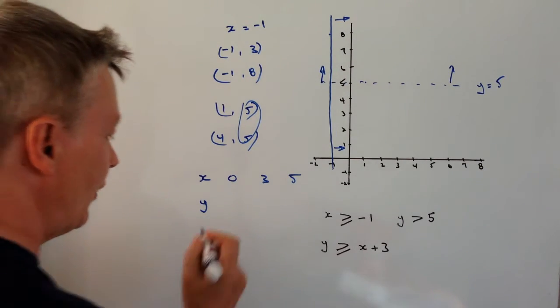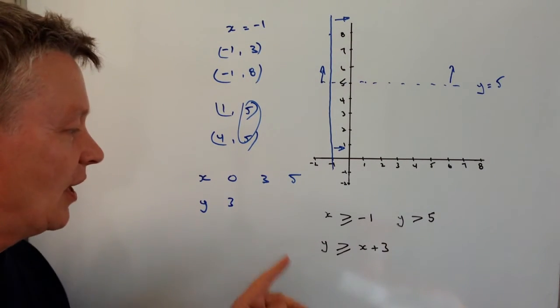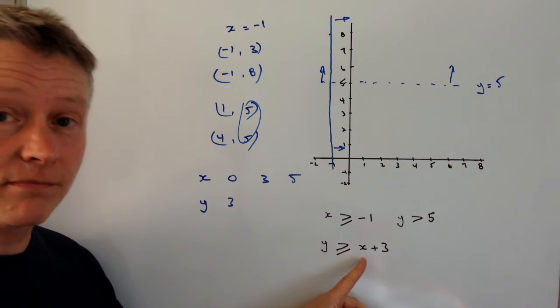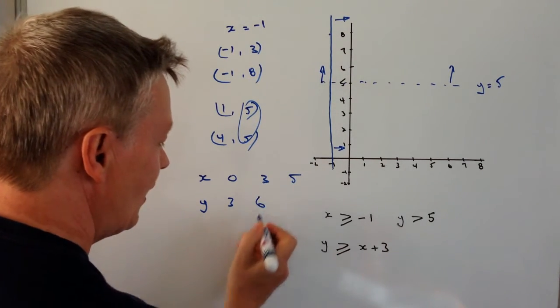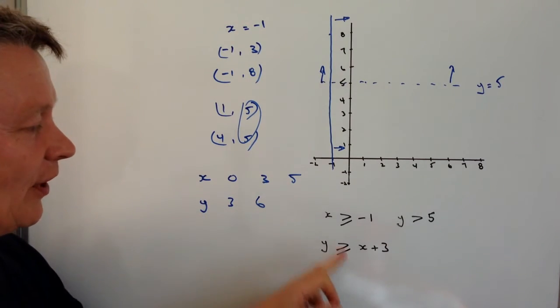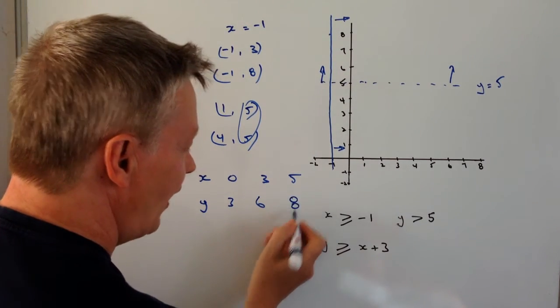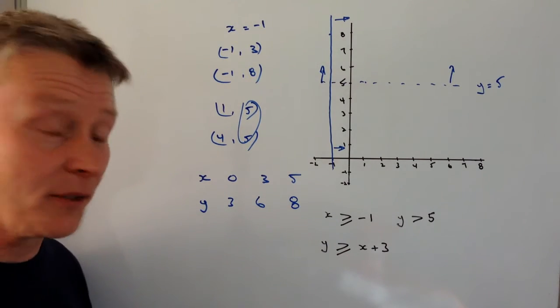So that's my first one. When X equals 3, Y equals 3 is 6, and when X equals 5, Y equals 8. OK, so they're fairly straightforward points for me to be able to plot.